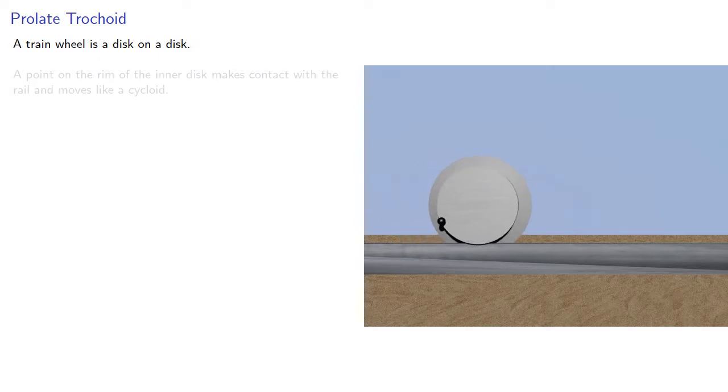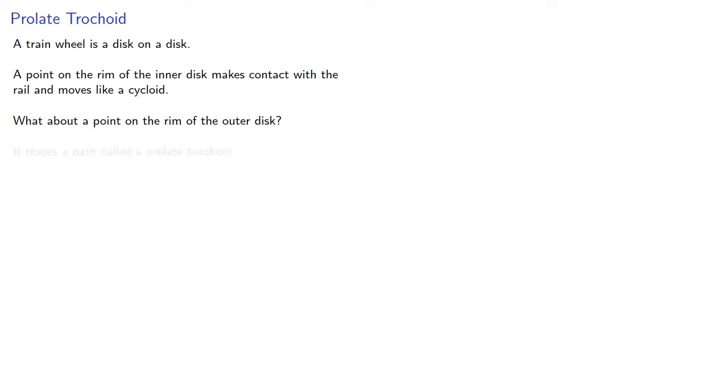A point on the rim of the inner disc makes contact with the rail and it will move like a cycloid. But what about a point on the rim of the outer disc? It will trace a path known as a prolate trochoid.